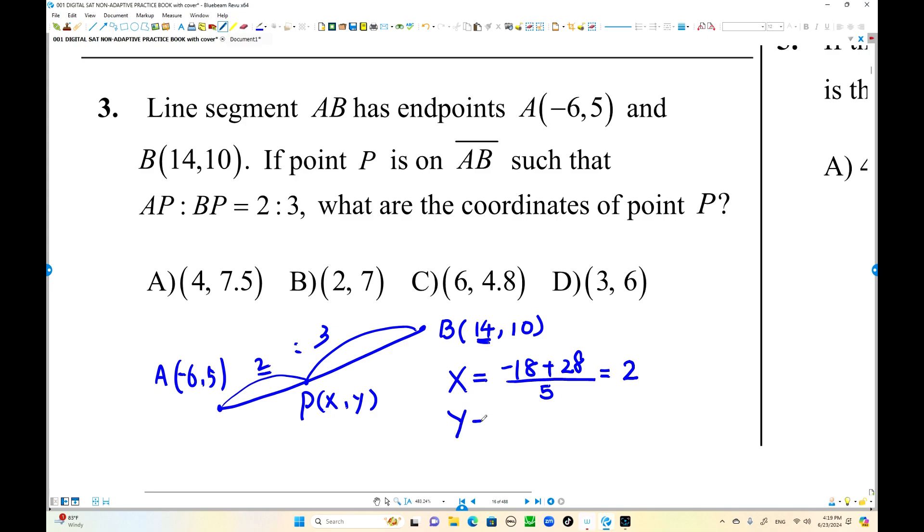Y coordinate, still the denominator is 5. Three times the other side y coordinate 5, three times 5 is 15. Plus 2 times the other side y coordinate 10, two times 10 is 20. 35 over 5 is 7.